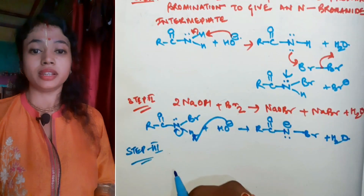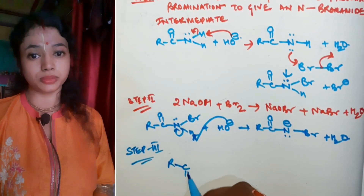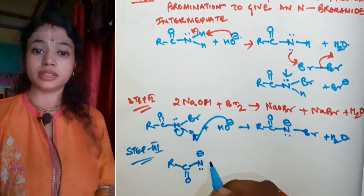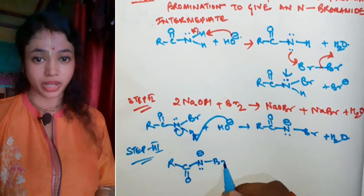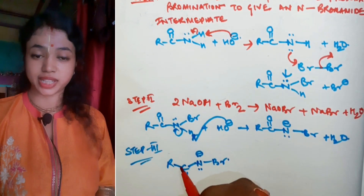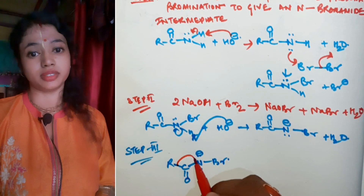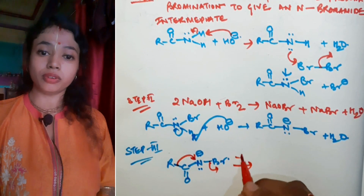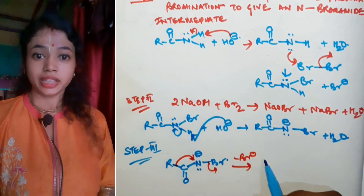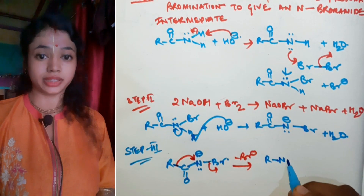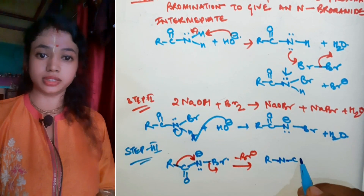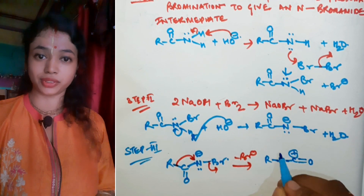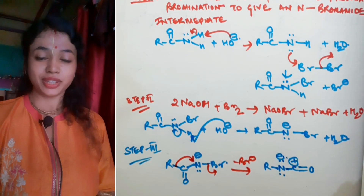In step two, two molecules of NaOH react with bromine to give NaOBr, NaBr, and H2O. A base again takes up a proton from the reaction medium to give an intermediate. Now the R group shifts to the nitrogen, which has a greater electron density, forming the next intermediate.